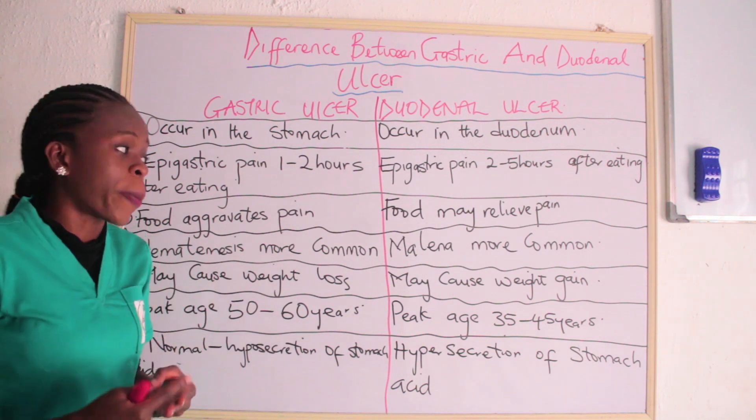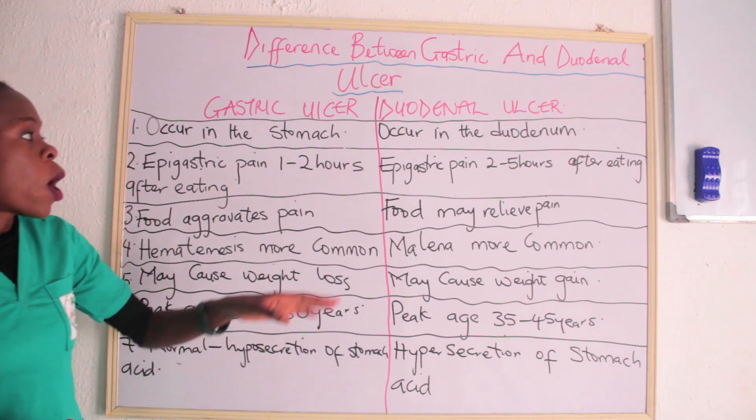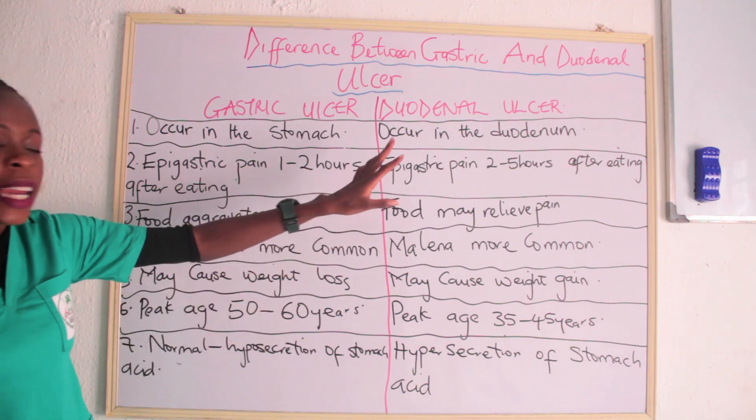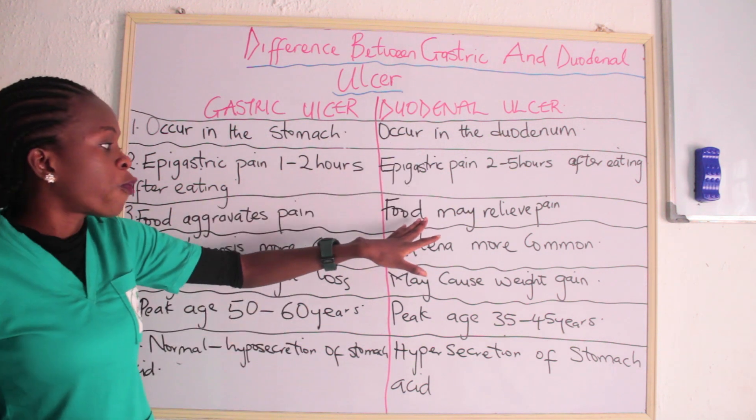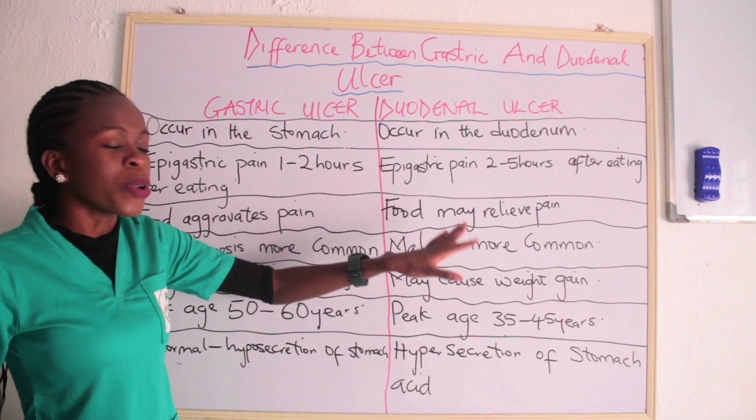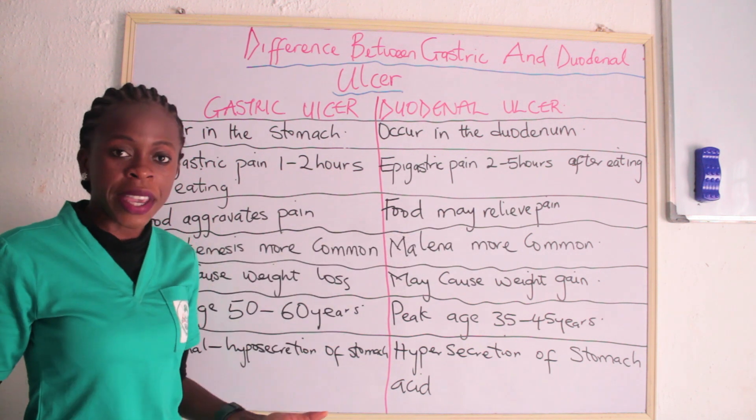Another difference is the effect of food on pain. In gastric ulcer, food aggravates or increases the pain. But in duodenal ulcer, food may actually relieve the pain.